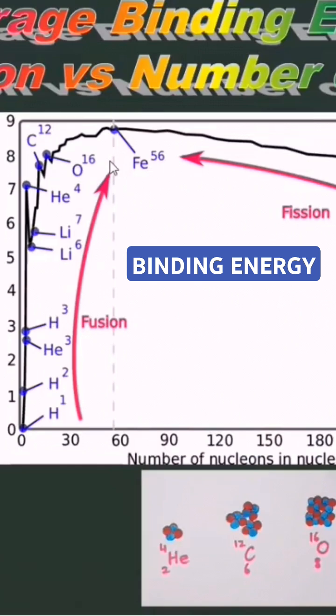After iron 56, the binding energy per nucleon slowly decreases. So this is the region of greatest stability.